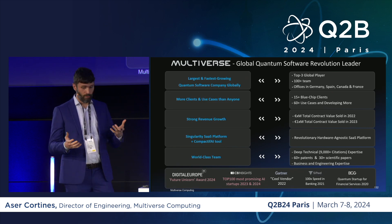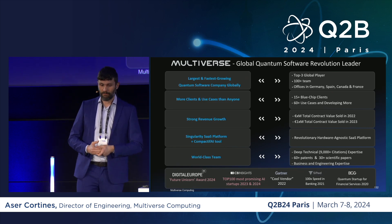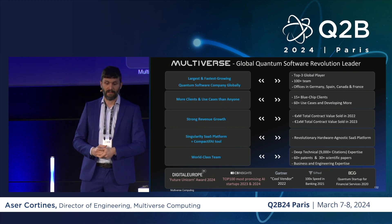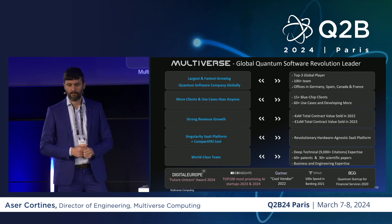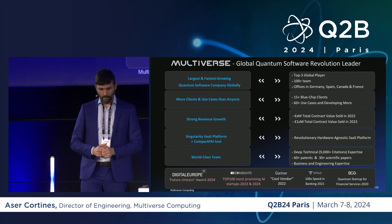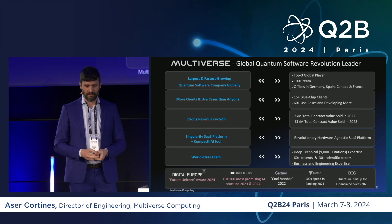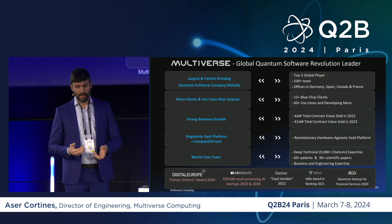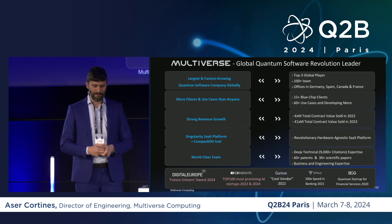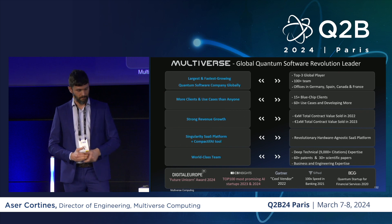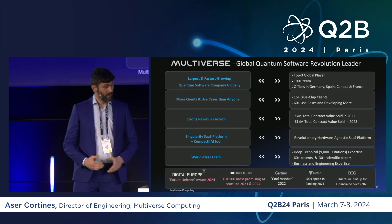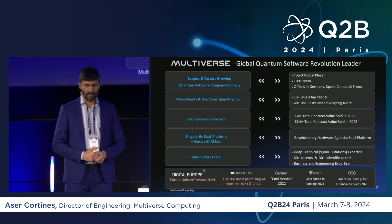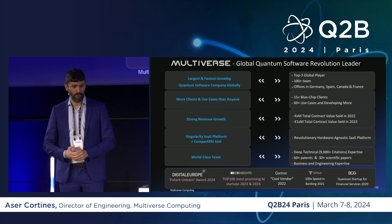We are developing two SaaS platforms: Singularity on one hand, which is a solution for industries, and Compactify AI designed to reduce the size of machine learning models. I'm very proud to work at Multiverse because the team is world class — we have many PhD students and a very strong, interesting team to work with. In 2024, we were ranked as a future unicorn.